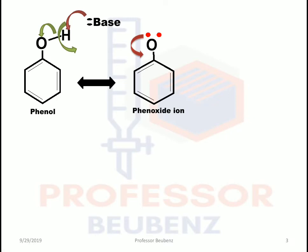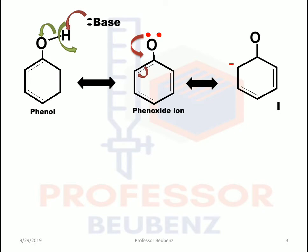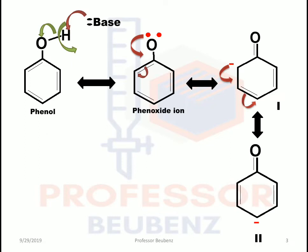In this phenoxide ion, the lone pair of electrons on the oxygen gets delocalized into the benzene ring — it shifts from oxygen into the bond. This disturbs the valency of the adjacent carbon, and the pi electrons shift to the next carbon atom to form resonance structure 1. Then the negative charge delocalizes again into the bond, and the pi electrons shift to the next carbon atom to form resonance structure 2.